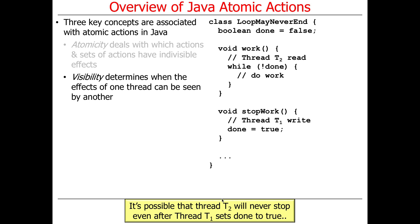Down here we have another method called stopWork, which thread T1 will call at some point, setting done to true. The question is: will this program ever terminate? The answer is we don't know, because this code has no synchronization. One thread could be reading a cached copy of done while another is writing to a cached copy, and the write may never percolate to the reading thread. This code may never stop running even though we're setting done to true.